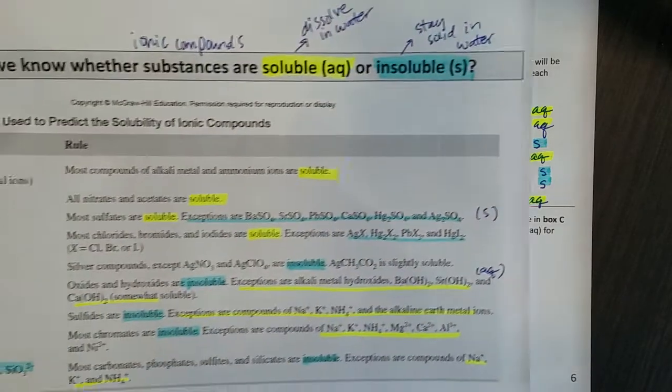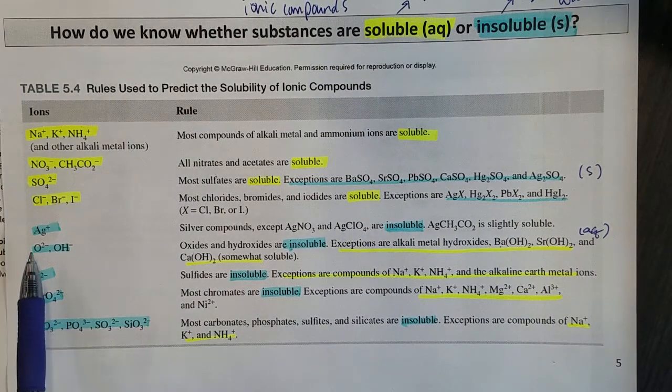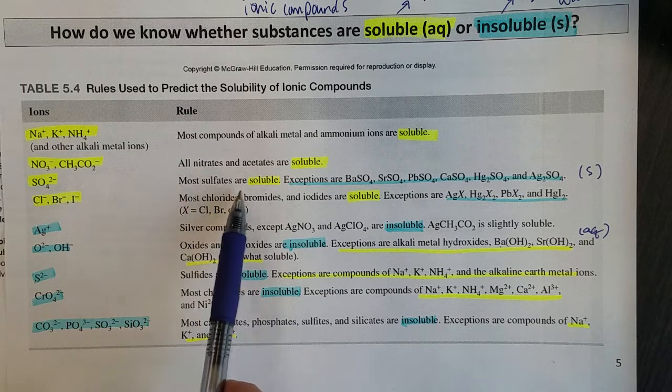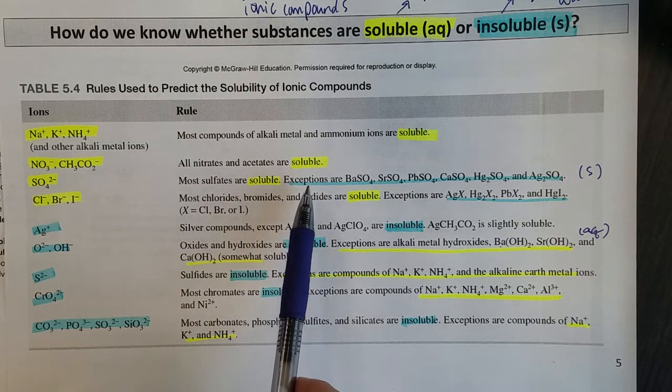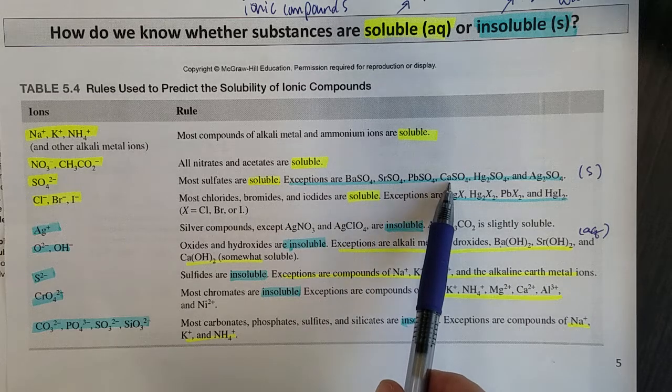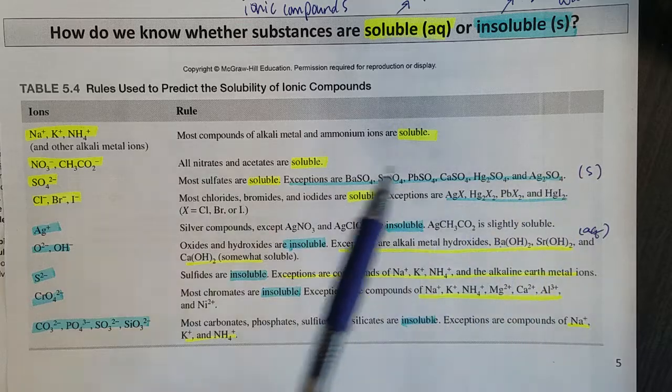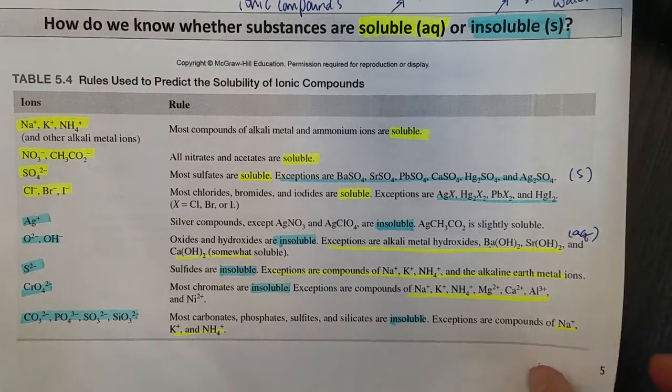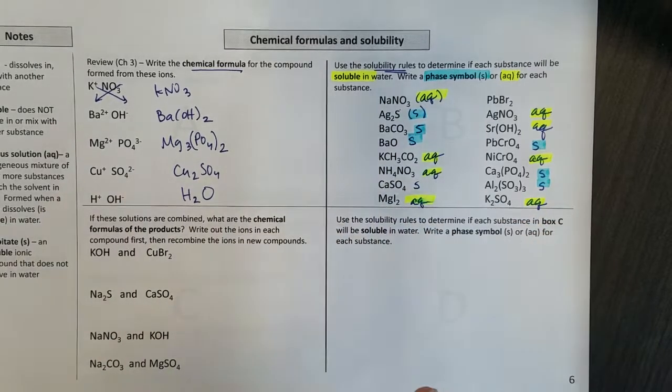Calcium sulfate. So if I look on my solubility rules, I see that sulfates are mostly soluble, but I always want to check the exceptions. Exceptions I see here are calcium sulfate. So if it's not soluble, that means it's insoluble. And I'm going to write a solid down. So that was one of the exceptions there. So calcium sulfate is solid.